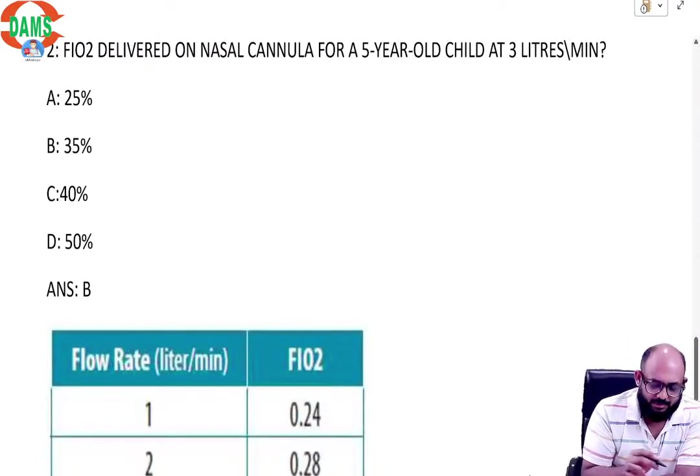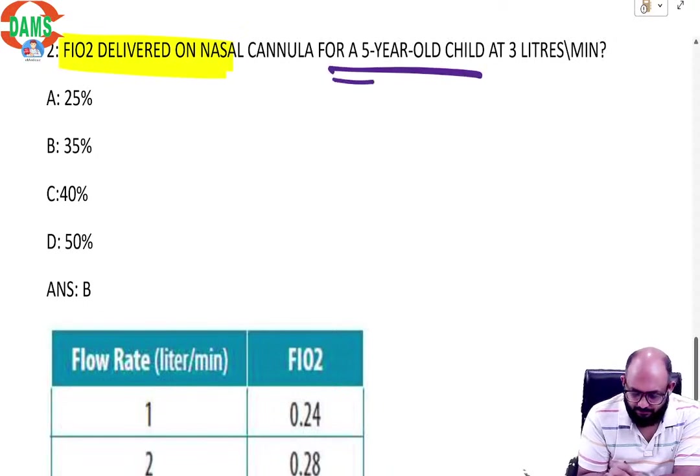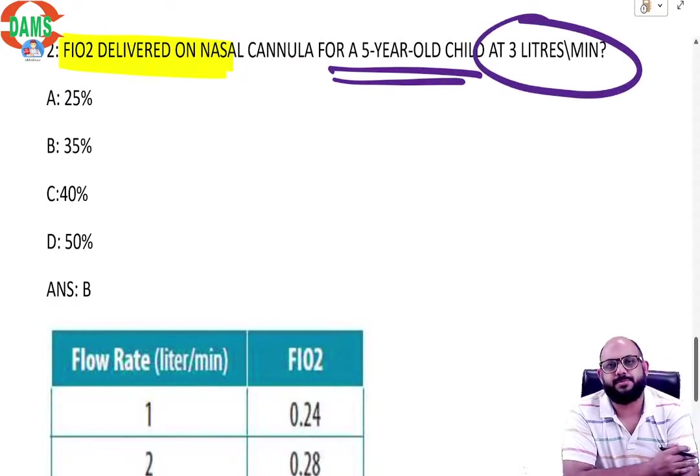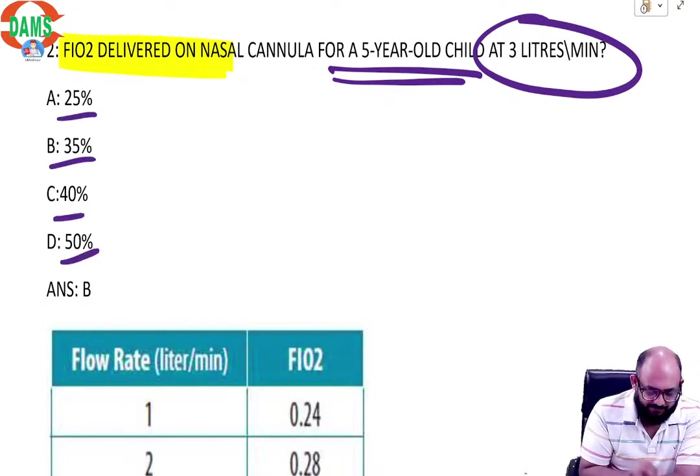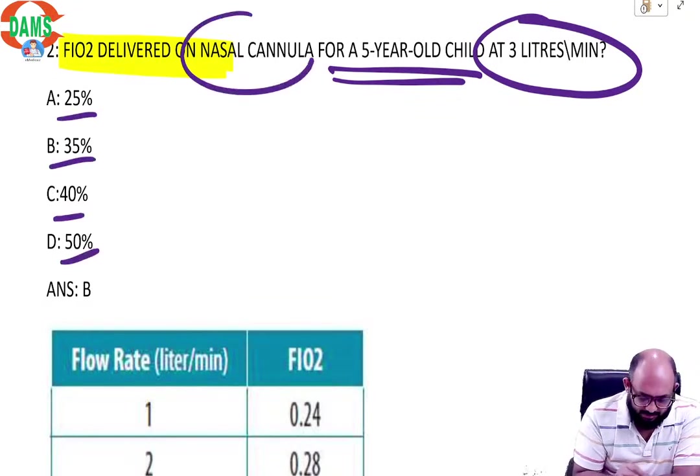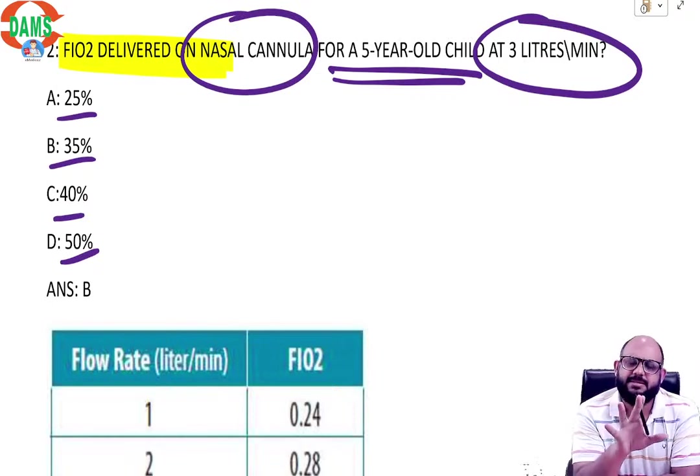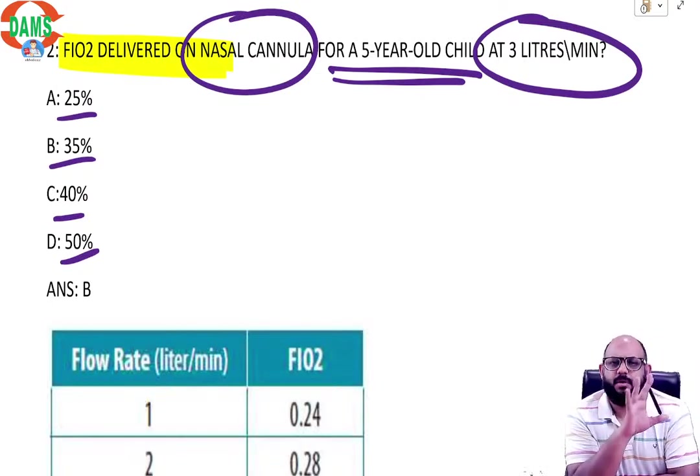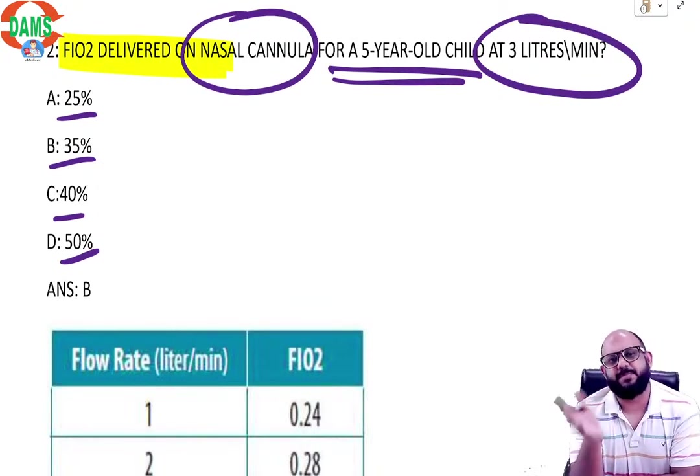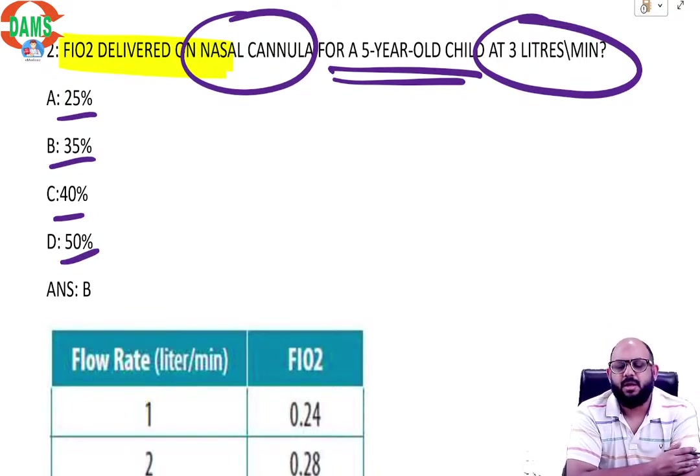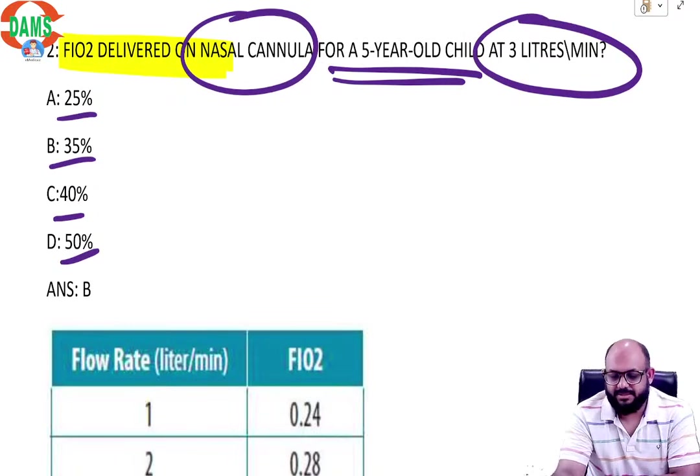Second question was FiO2 delivered on nasal cannula for a five year old child at three liters per minute. So the options were 25, 35, 40, 50. Now it is asked nasal cannula and I have maintained this thing to you all the time, always, unless and until specified nasal cannula always means low flow nasal cannula, unless and until they specify a high flow nasal cannula, you will always consider it as a low flow nasal cannula.